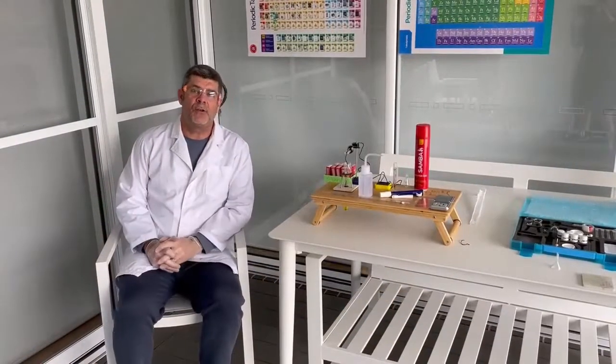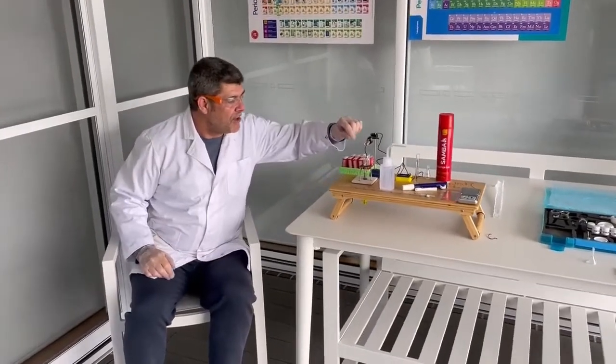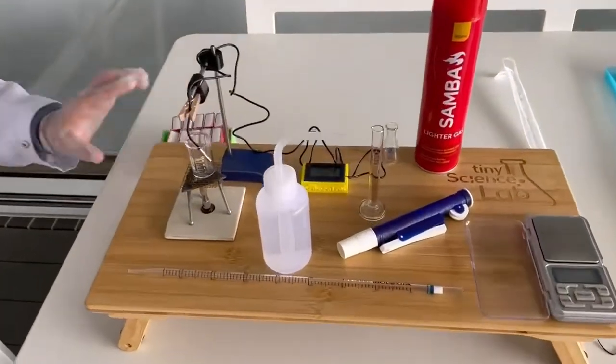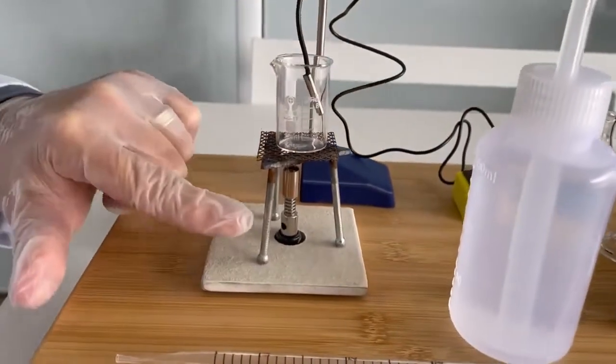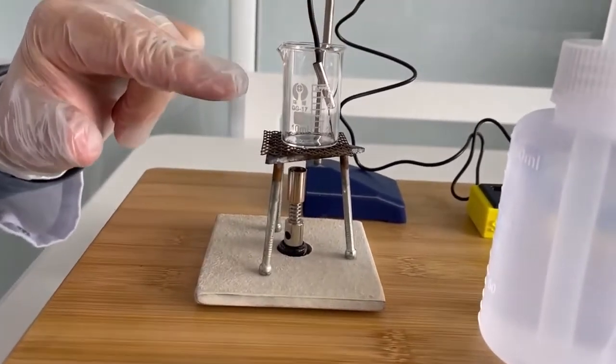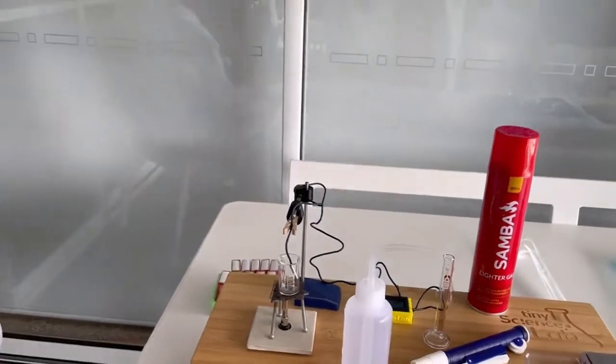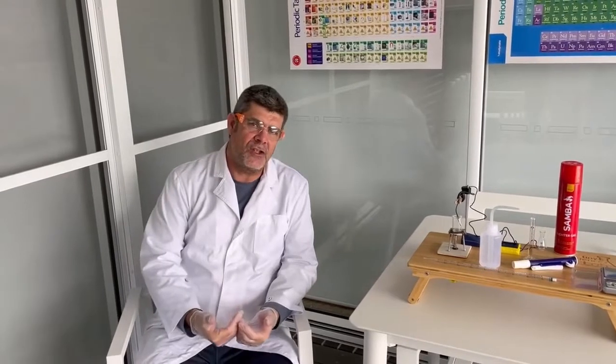So today, we want to have a look at a combustion reaction. In order to do that, I'm going to use this setup right here. So what you can see is a Bunsen burner. Above the Bunsen burner, we have a tripod, a gauze mat, and a beaker. So what I want to try and do is I want to carry out what's called the enthalpy of combustion. So that is the energy change that occurs in a combustion reaction.